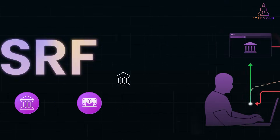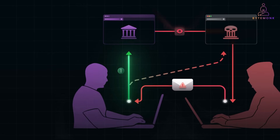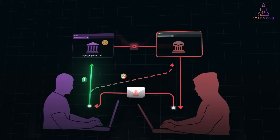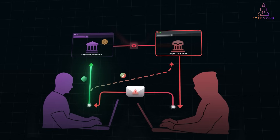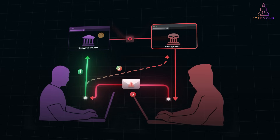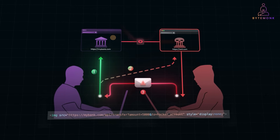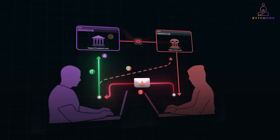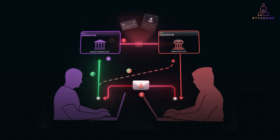Let's start with CSRF in banking transactions. Imagine you are logged into your online banking account at mybank.com. The bank uses cookies for authentication, which means every request you send automatically includes those cookies because your browser stores authentication session cookies. You then open a tab and unknowingly visit a malicious website, say evil.com. That malicious site automatically sends a hidden request to your bank's API. Since your browser is still logged into the bank, it automatically includes your session cookies with the request.